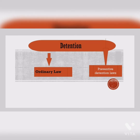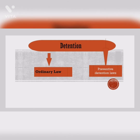But in preventive detention laws, a person has been detained without trial and conviction by the court. This is not merely a punitive measure but a precautionary measure, and it is based on suspicion — meaning a person has been detained on the ground of suspicion that he may disturb law and order, even though he has not committed any offense.